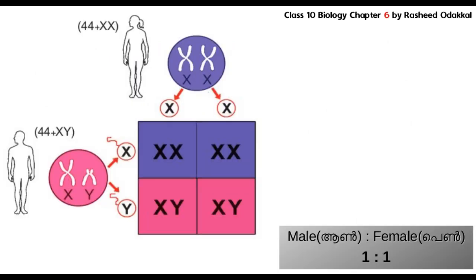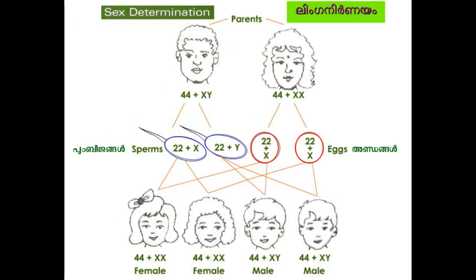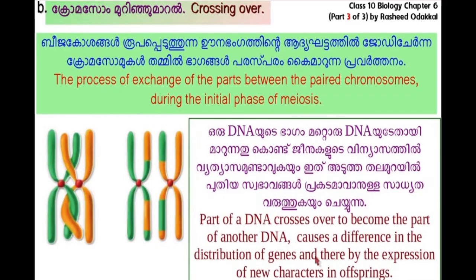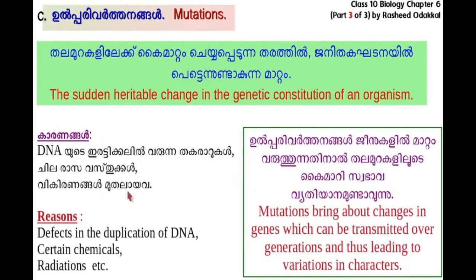When an ovum or egg fertilizes with an X chromosome-containing sperm, the possible child will be female. When the ovum fertilizes with a Y chromosome-containing sperm, the possible child will be male. When gametes undergo fusion, the combination of alleles changes, causing variation of characteristics in offsprings of the same parents. During the initial phase of meiosis, crossing over — the pairing and exchanging of parts of chromosomes — also causes variation in offsprings.